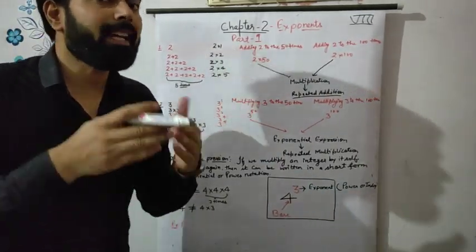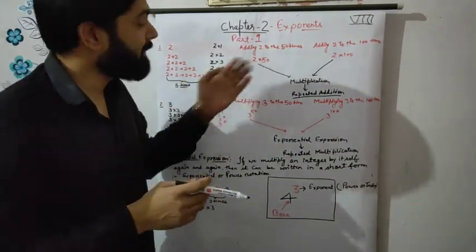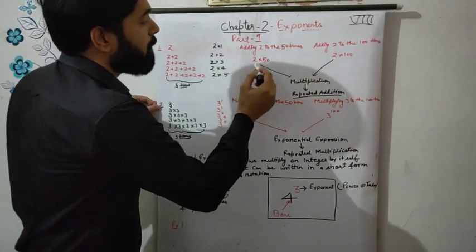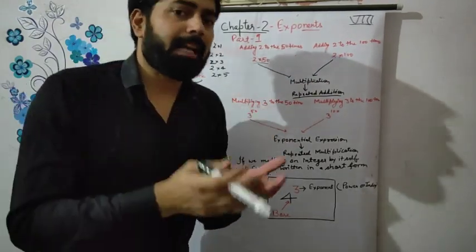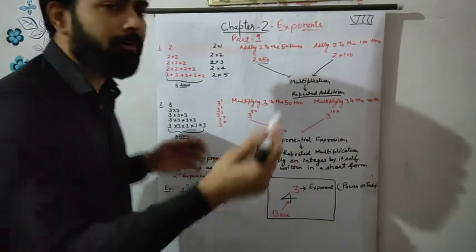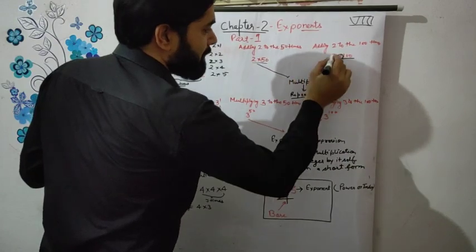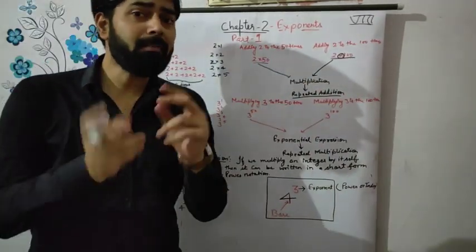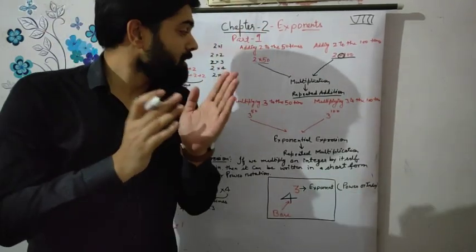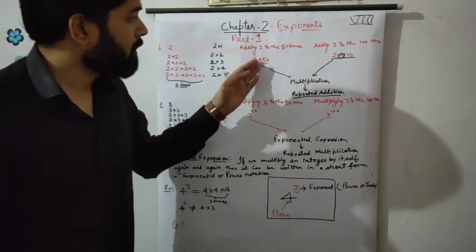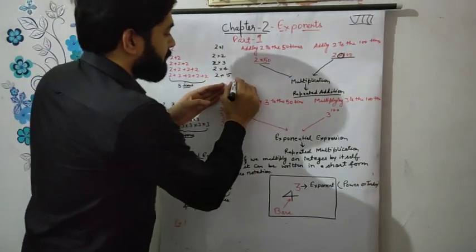Now if we have 50 twos, how can we add them? This is the problem. We can solve it as 2 multiplied by 50. Suppose 2 is added 100 times — we can write 2×100. This is multiplication. And what is multiplication? You also studied this in previous classes. Multiplication is repeated addition.